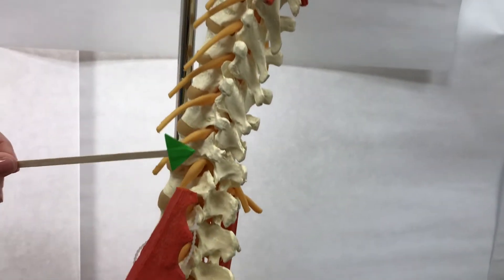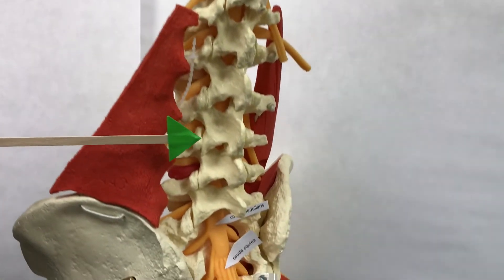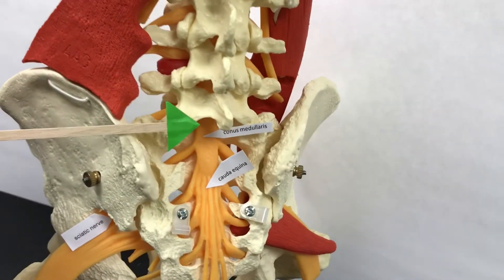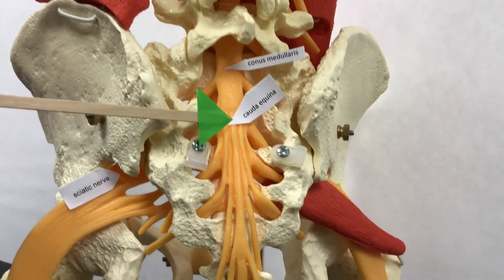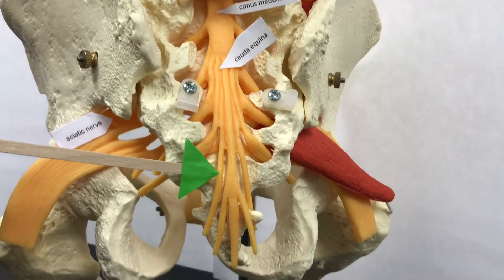When we go all the way down to the bottom of the spinal cord, we have the conus medullaris, and then we have the cauda equina or horse's tail.